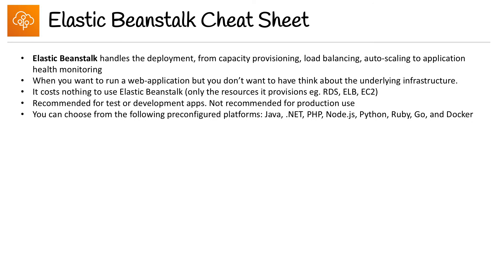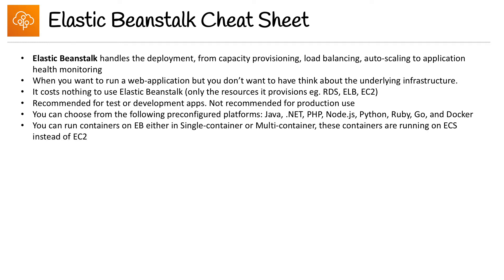You can choose from the following pre-configured platforms: Java, .NET, PHP, Node.js, Python, Ruby, Go, and Docker. You can run containers on EB either in single container or multi-container mode. These containers are running on ECS instead of EC2.